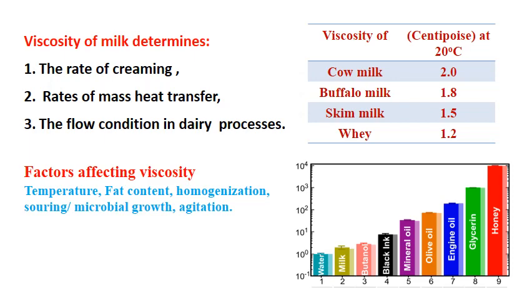The viscosity of milk determines the rate of creaming — that is, the cream rising to the surface — the rates of mass and heat transfer during heating of milk, and the flow conditions in dairy processes. Whenever there is dairy processing, milk has to travel through many pipes, so flow is also affected by viscosity. The factors affecting viscosity are temperature, fat content, homogenization, souring or microbial growth, and agitation or mixing. Viscosity is expressed in centipoise at 20 degrees Celsius.